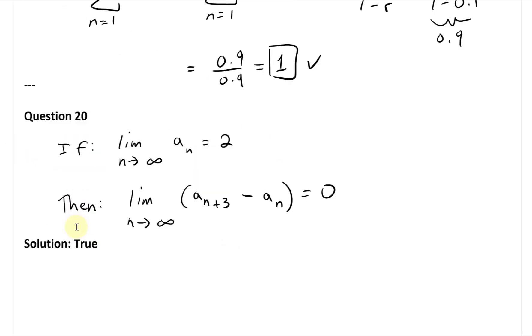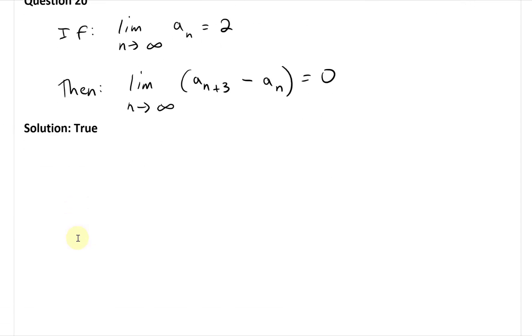So let's take a look at the solution. Yes, it is true, so let's write this out. Since we know that limit as n approaches infinity of a_n equals 2, then what we have is the limit as n approaches infinity of a_{n+3} is also going to 2.